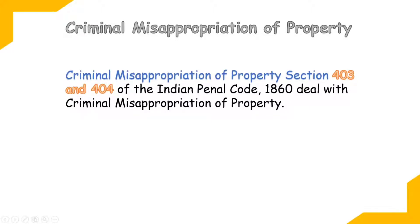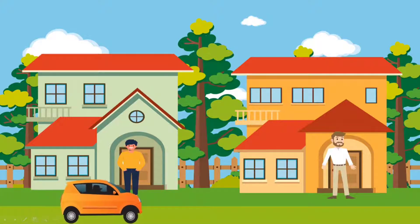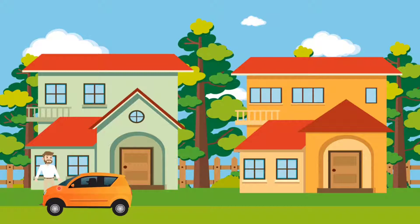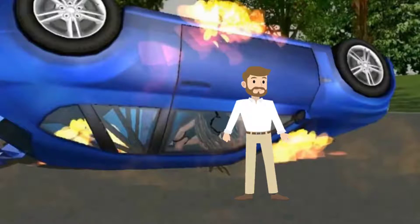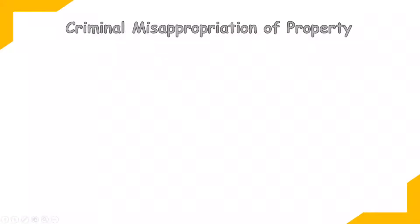Let's understand criminal misappropriation of property with a story. There are two neighbors, A and B. A purchases a brand new car. B gets jealous and one day when A wasn't home, B gets a duplicate key, takes the car for a drive, and meets with an accident. This is criminal misappropriation of property — A has taken that property without permission, and it is an offense covered under this topic.